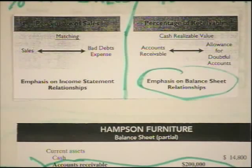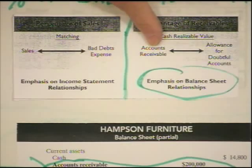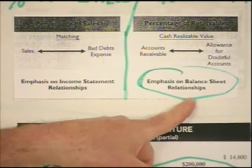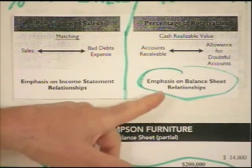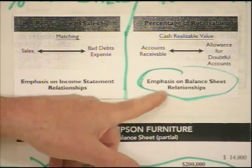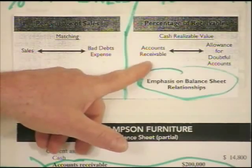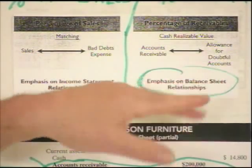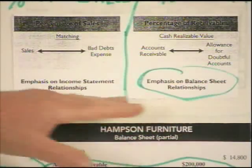The other side of the coin is the percentage of receivables. When we take a percentage of receivables, we're placing emphasis on the balance sheet itself instead. What we're doing is taking a percentage of our receivables and establishing what we believe the allowance account balance should be. As we go through these two methods, you'll see this will make more sense.